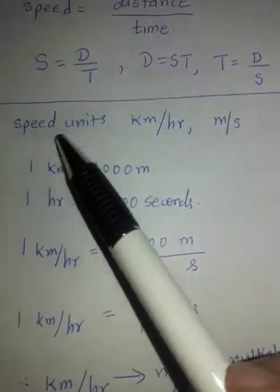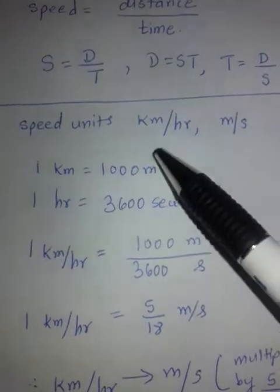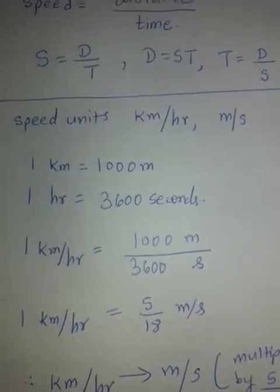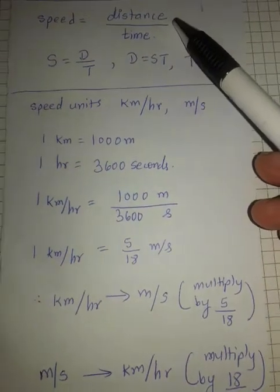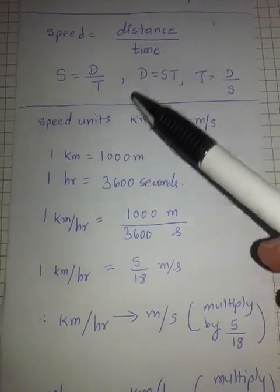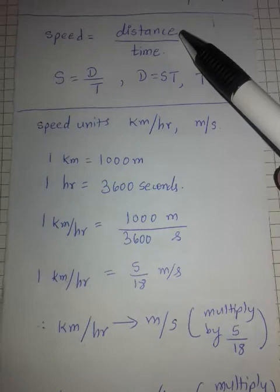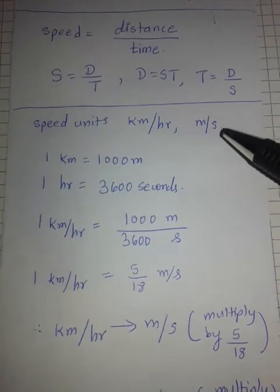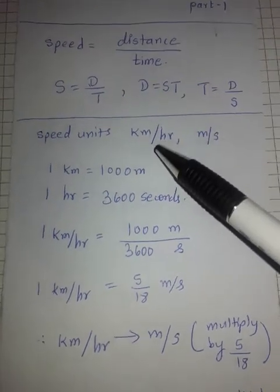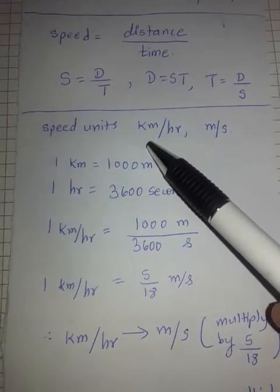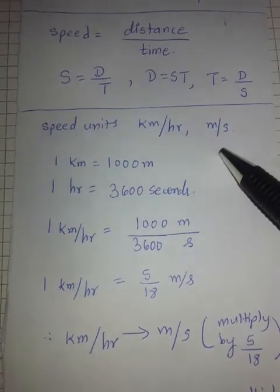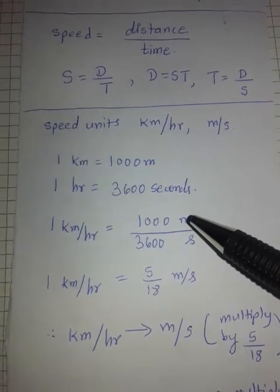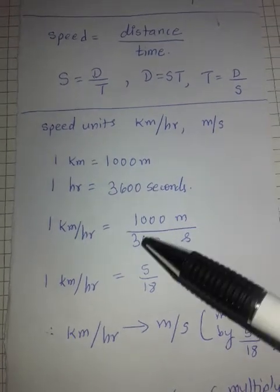Now about the unit of speed. Speed is generally given in kilometres per hour or metres per second. When distance is in kilometres and time is in hours, speed is in kilometres per hour. When distance is in metres and time is in seconds, the speed unit becomes metres per second. But sometimes you need to convert while solving examples — kilometres per hour to metres per second, or vice versa. We will see which type of examples require conversion later.